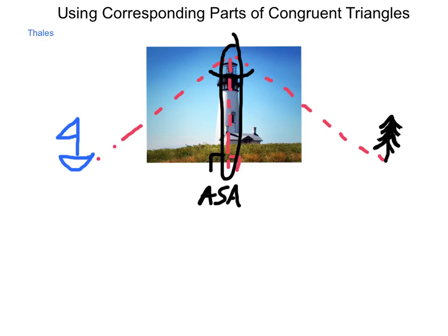all corresponding parts would be congruent to one another and the distance from the tower to the tree would have to equal or be congruent to the distance from the tower to the boat.